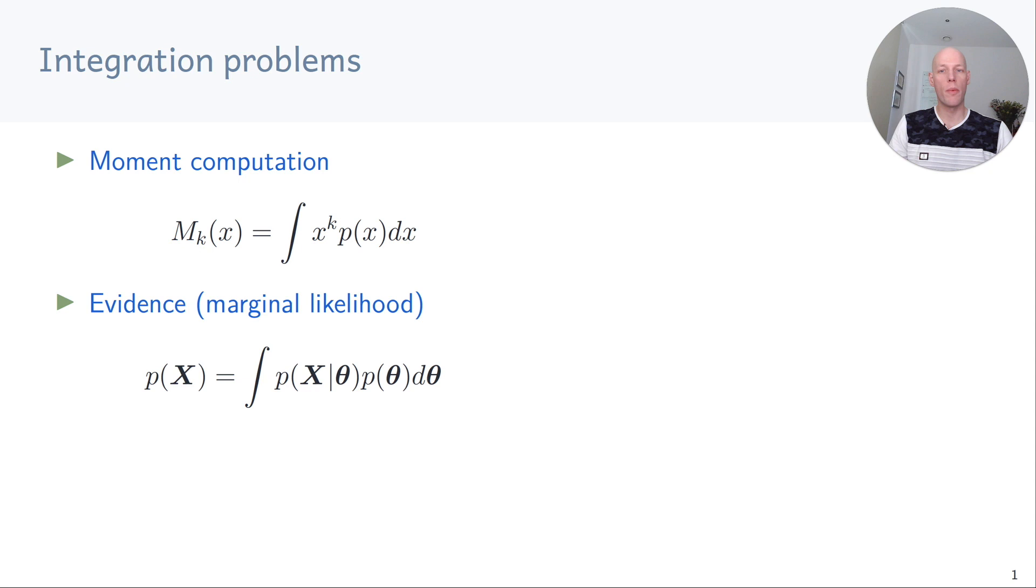When we want to compute the model evidence, which is useful for model comparison, we need to solve an integral. We also often need to compute Kullback-Leibler divergences, for example in variational inference. Here we also need to compute an integral.